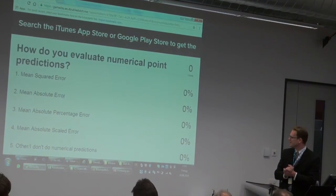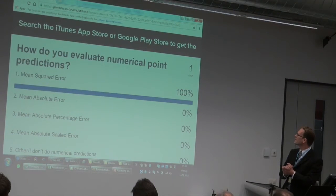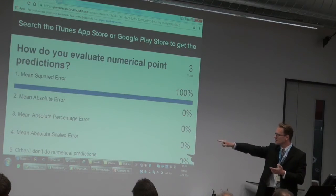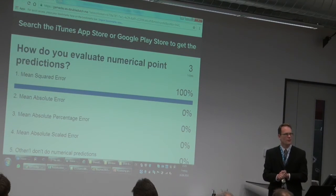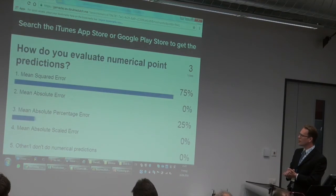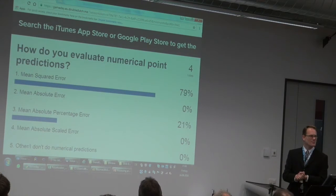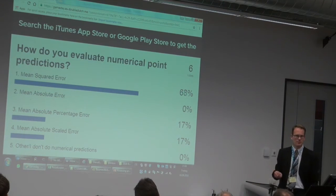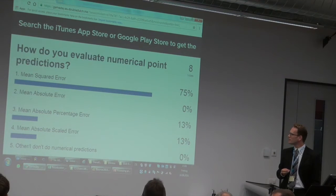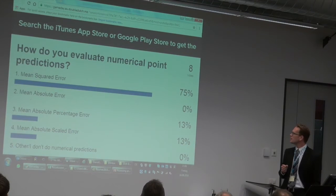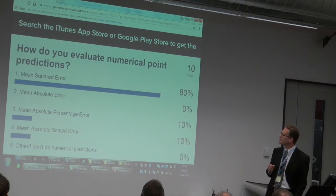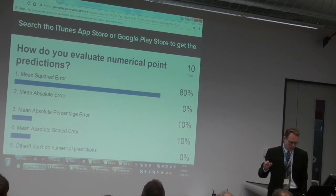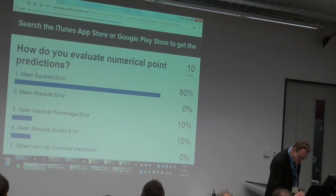I'm waiting for votes. First vote, second vote — wonderful. I was kind of afraid that everybody would say they don't do numerical predictions, in which case I would have asked why they came to this talk. Three votes, five votes, six votes. So these are essentially the kinds of parameters you see in forecasting, and lots of people know a lot about this. I may be preaching to the choir if everybody uses mean squared error.